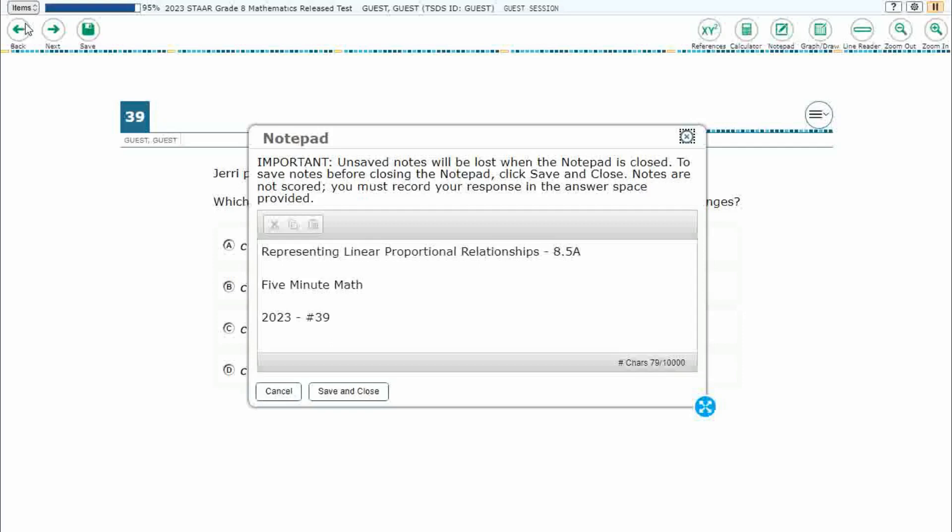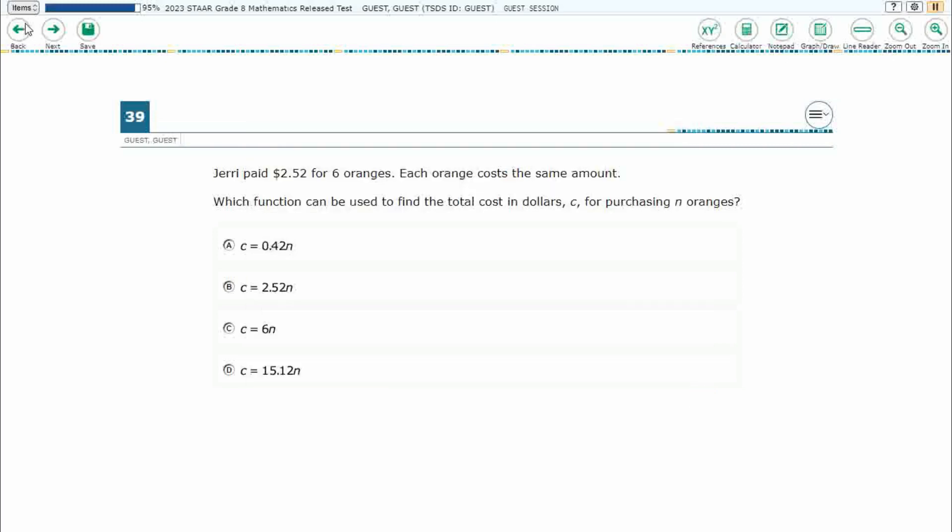Hello, and welcome to 5-Minute Math. Today we are looking at the 8th grade concept of representing linear proportional relationships. This is standard 8.5a in the great state of Texas, and we are using item number 39 of the 2023 released STAR test.